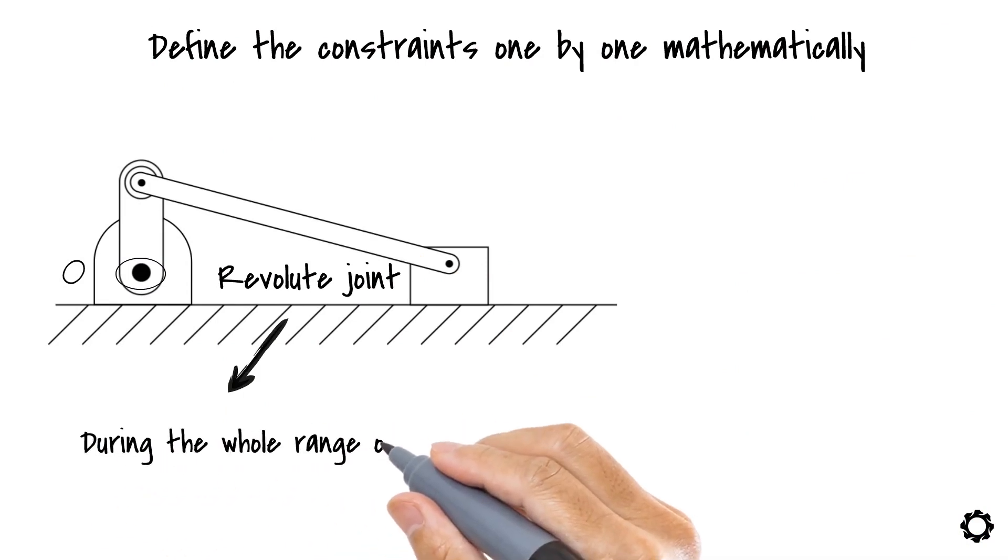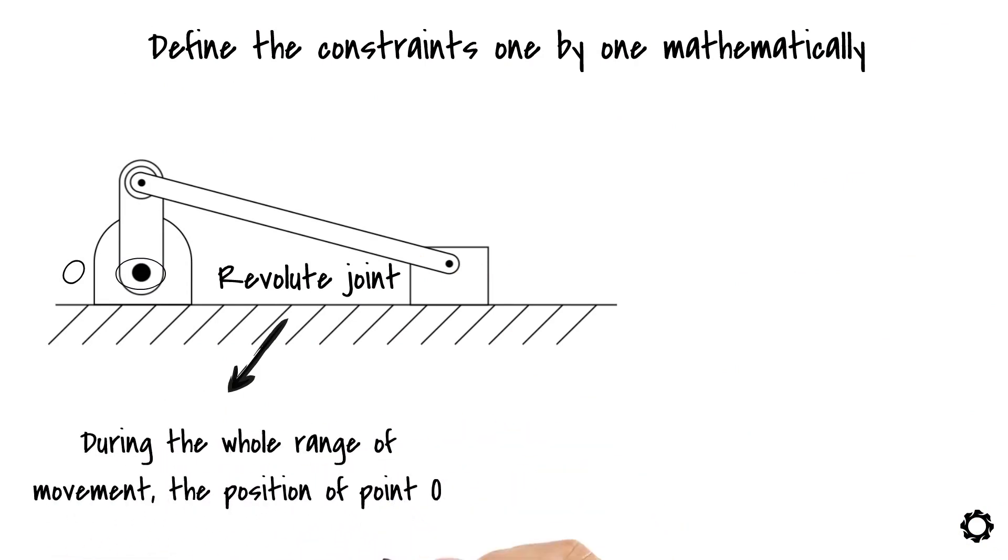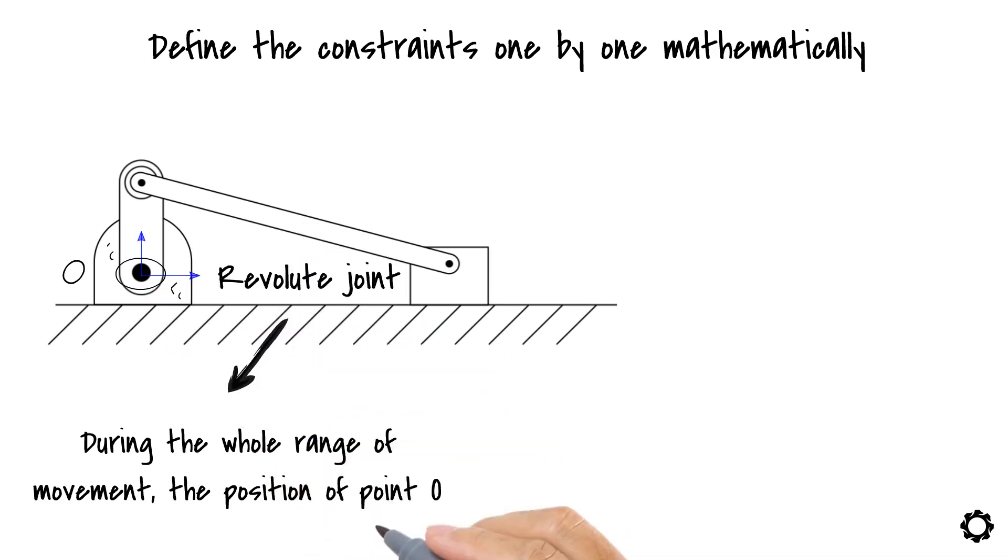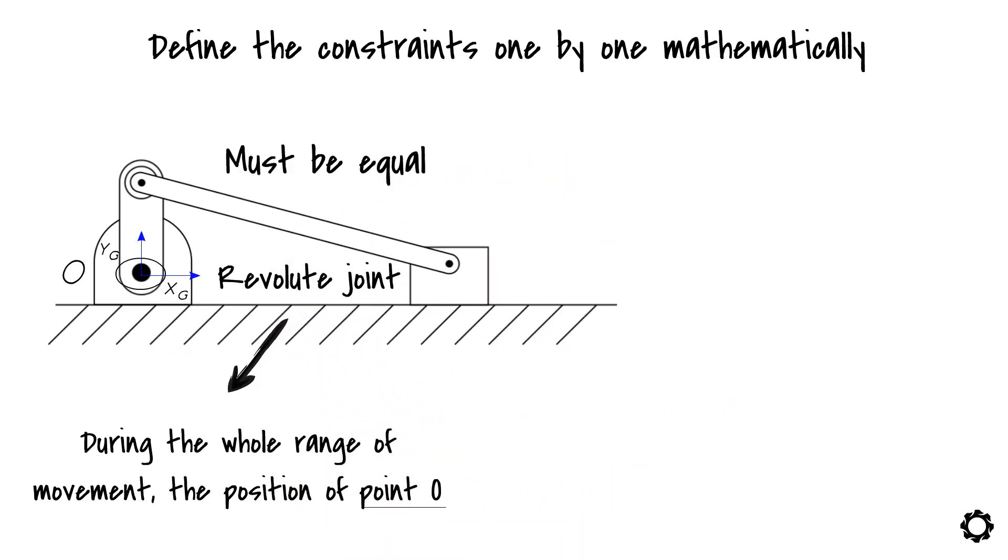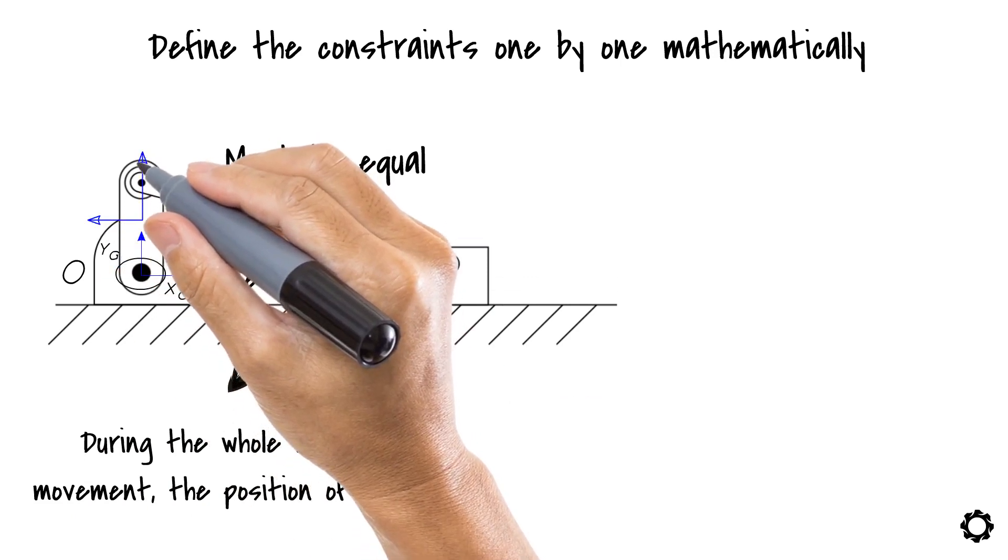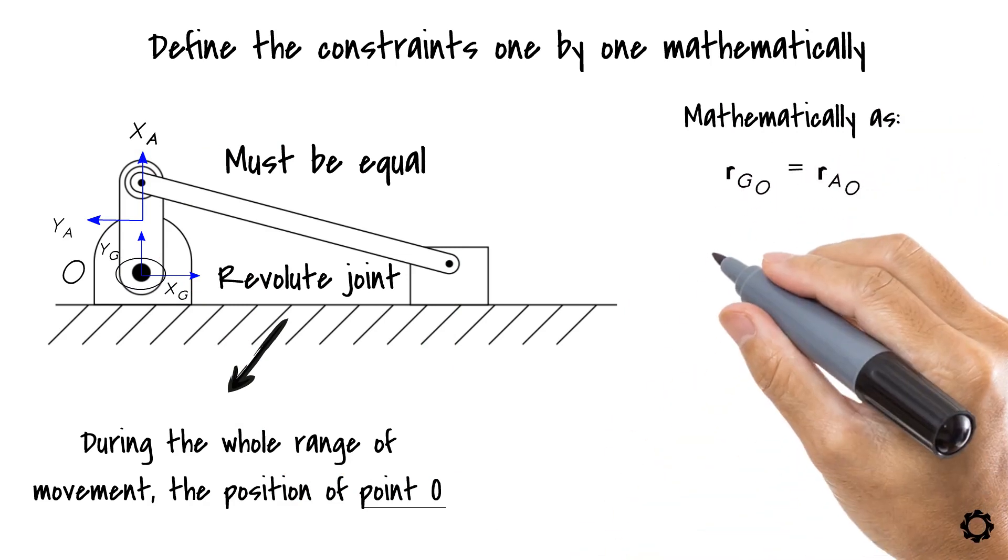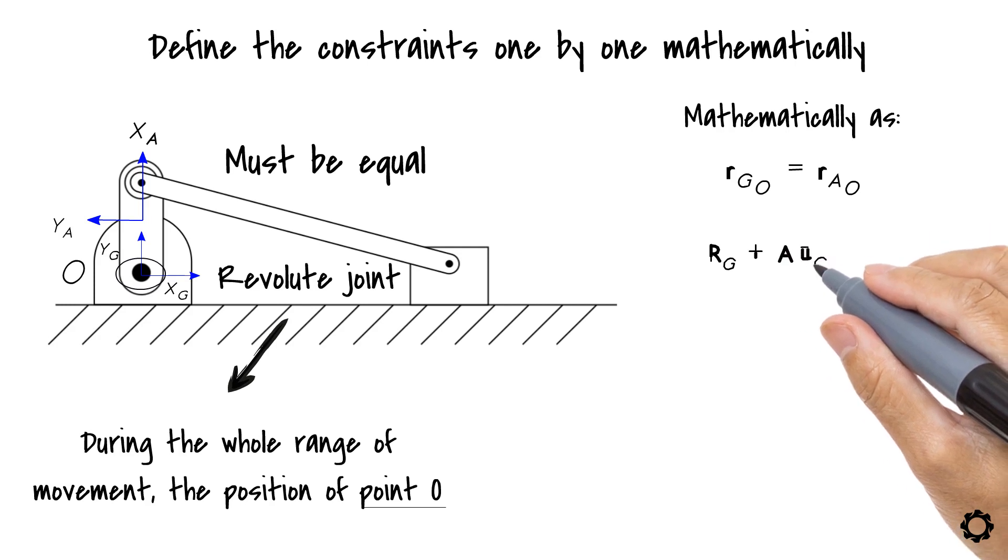During the whole range of movement, the position of point O, defined via the ground-attached reference system, must be equal to the position of the same point O, defined via the crank-attached reference system. We can express this mathematically as RgO equals RaO. Rg plus A_u bar_gO minus Ra plus A_au bar_AO equals zero.